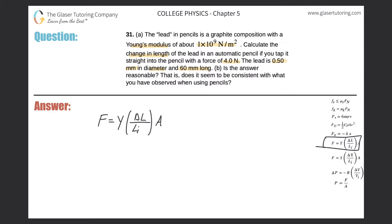So the force they told us was going to be 4 newtons. Young's modulus they said was 1 times 10 to the 9. The change in length is what we're after. The initial length they told us is going to be 60 millimeters long, but I have to convert that to meters. There's a simple trick: just move the decimal three places to the left, so it's going to be 0.060.